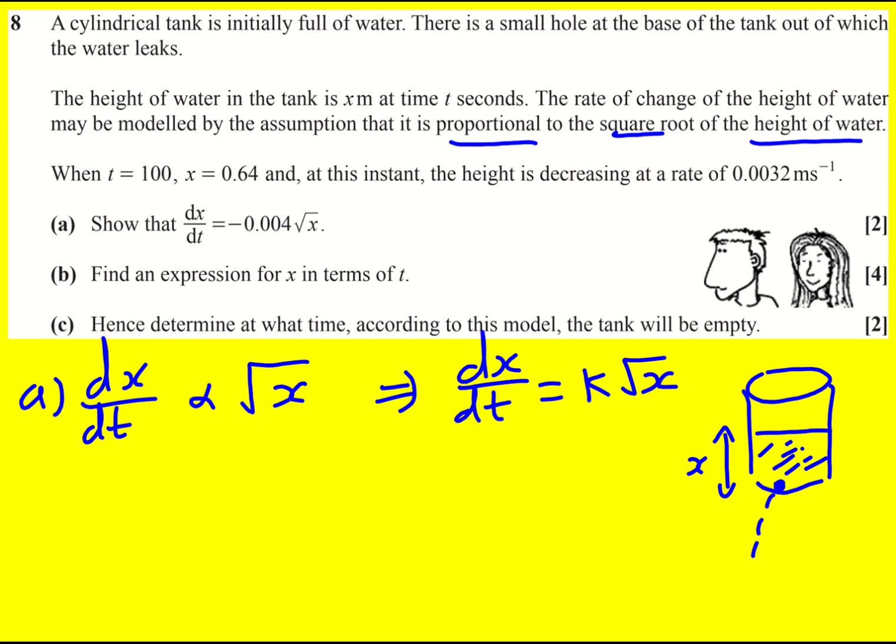That's how proportionality works. If one doubles, the other doubles, and they're basically related through a scale factor which is our k. We're then told that when t is 100, x is 0.64, and the height is decreasing at a rate of 0.0032.